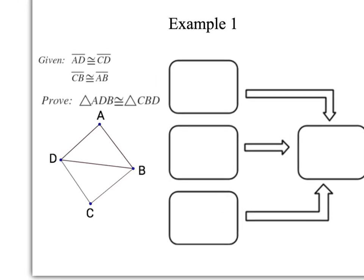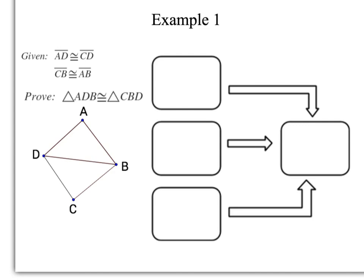In the following presentation, you will be proving that triangles are congruent by using flowcharts. In this first example, we look at our givens. We've got AD congruent to CD, CB congruent to AB, and we're trying to prove the two triangles are congruent.